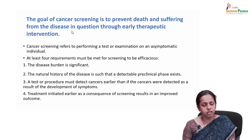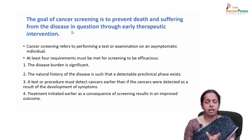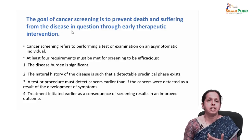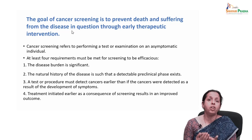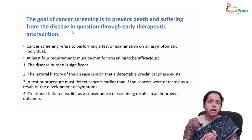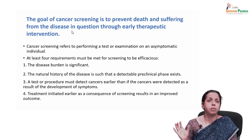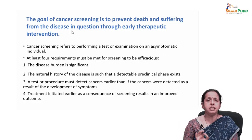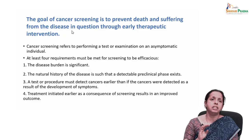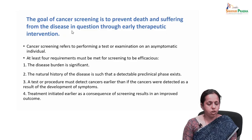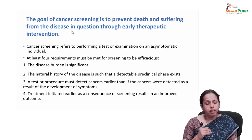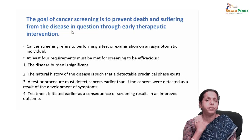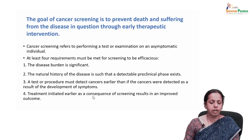The natural history of the disease must be such that a detectable pre-clinical stage exists. For example, cervical cancer progresses such that if screened in pre-clinical stages, it is very much treatable and patient survival outcomes are very good. The test or procedure must detect cancers earlier, before symptoms develop, and treatment initiated earlier will result in a better clinical outcome.